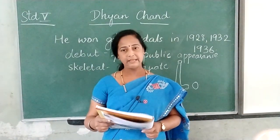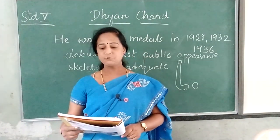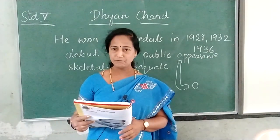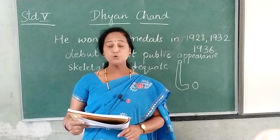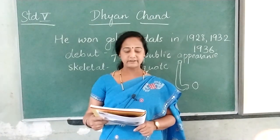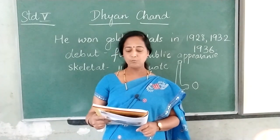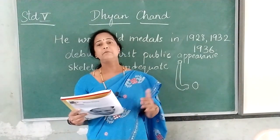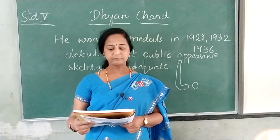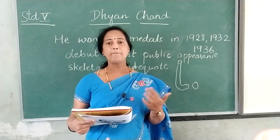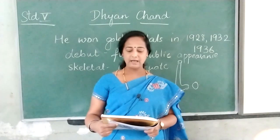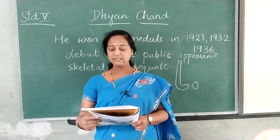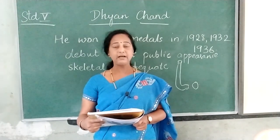Known as the wizard for his super ball control, Dhyan Chand played his final international match in 1948, having scored more than 400 goals during his remarkable international career. He was not only good at the national level but great at the international level also. Dhyan Chand was born in Allahabad. He was the elder brother of another player, Roop Singh. His father, Sameshwar Datt Singh, was in the British Indian Army and played hockey in the army.